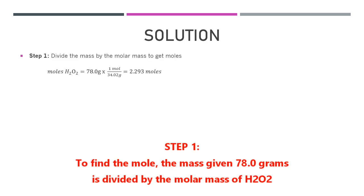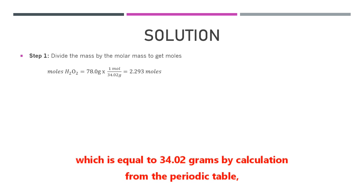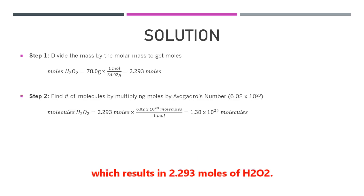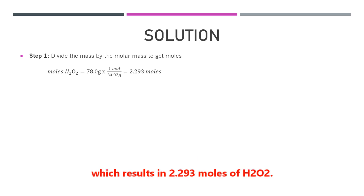Step one: to find the moles, the mass given — 78.0 grams — is divided by the molar mass of H₂O₂, which is equal to 34.02 grams, calculated from the periodic table. This results in 2.293 moles of H₂O₂.